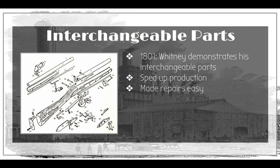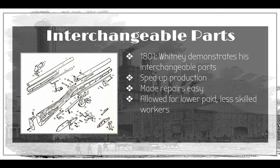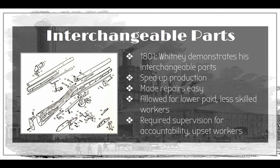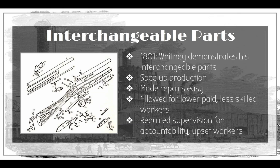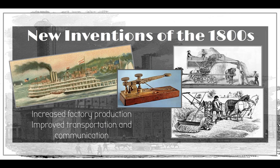If part number 15 broke in your gun before interchangeable parts, you'd have to throw the whole gun out. Now you just pull another number 15 from the bin and put it in. This also allowed for lower-paid, less-skilled workers — you didn't have to be a gunsmith; someone with no specialized background could come in and start making guns. However, it did require supervision to make sure every single part was made exactly the same, which upset workers who didn't like having someone watching them all the time.